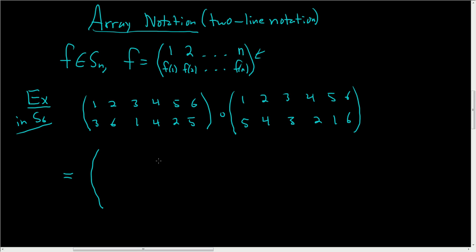Let's carefully do that. This will be equal to—we can write the top row: 1, 2, 3, 4, 5, 6. Function composition takes place right to left. Let's start with 1. Where does 1 go? If you look here, 1 goes to 5, and then 5 goes to 2, so 1 goes to 2. Let's go to 2 now.